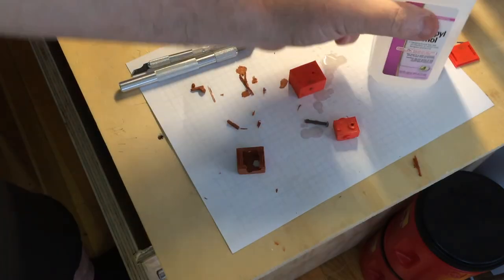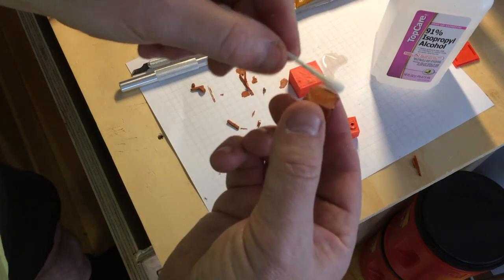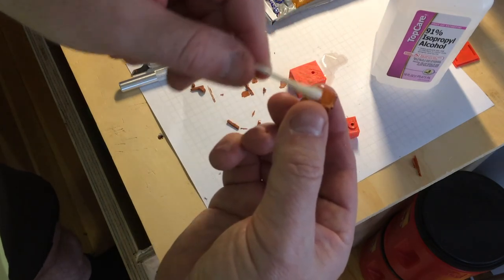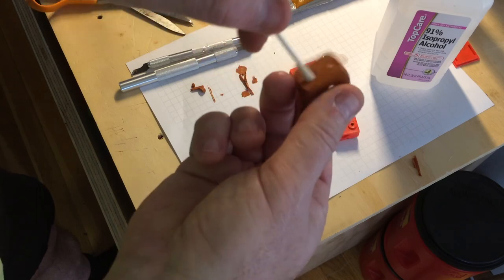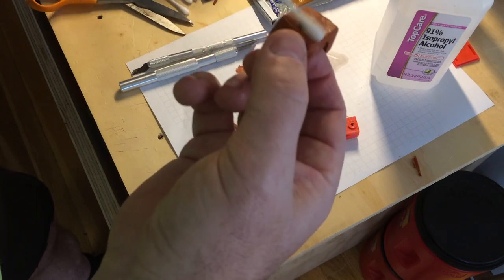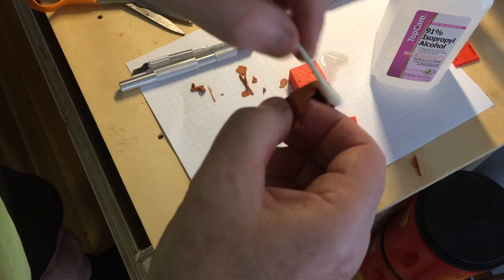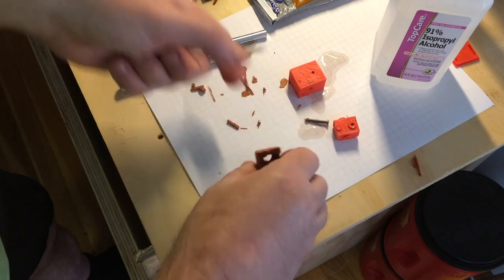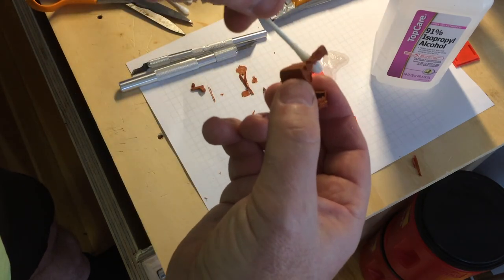Take a little rubbing alcohol, preferably 90 percent, clean the whole form piece—not the form, the actual piece. Basically what you're going to do is get rid of the Vaseline. And you just use a Q-tip and rub it over it with the rubbing alcohol.